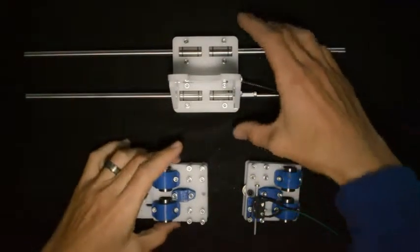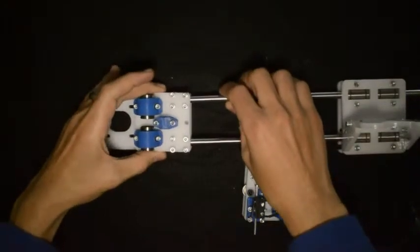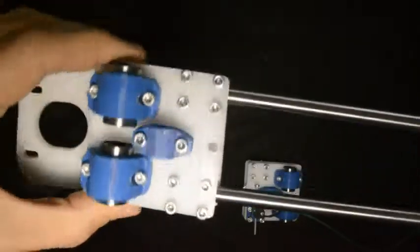Now we will assemble these assemblies to the ends of the linear rods. The linear rods need to go in there, so that it looks like that.